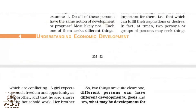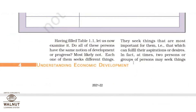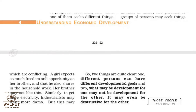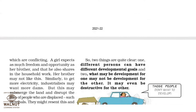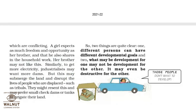At times, two persons or groups may seek things that are conflicting. A girl expects as much freedom and opportunity as her brother, and that he shares in household work. But her brother may not like that idea. Similarly, for an industrialist, building a dam is profit; but for a tribal person displaced from that land, it is not development.